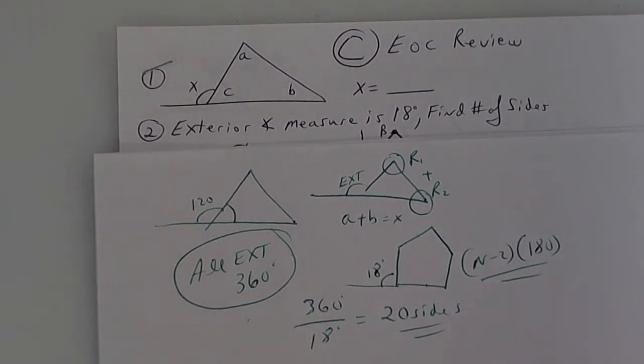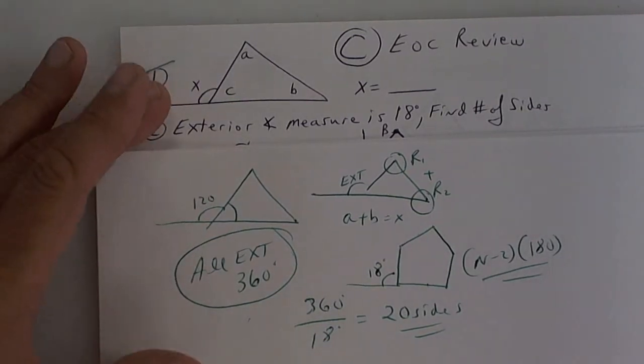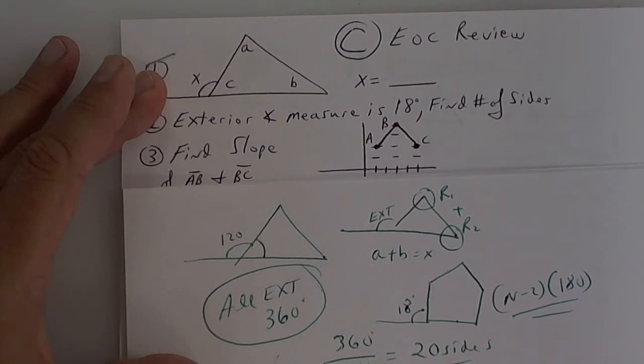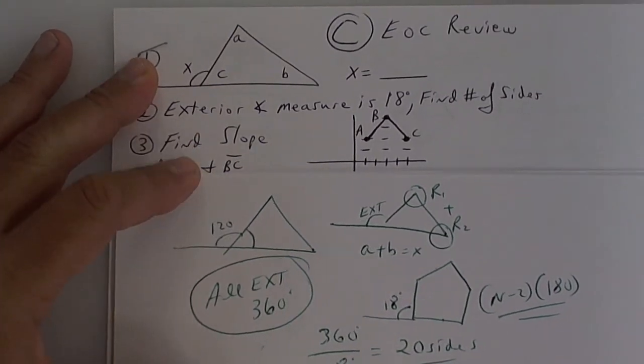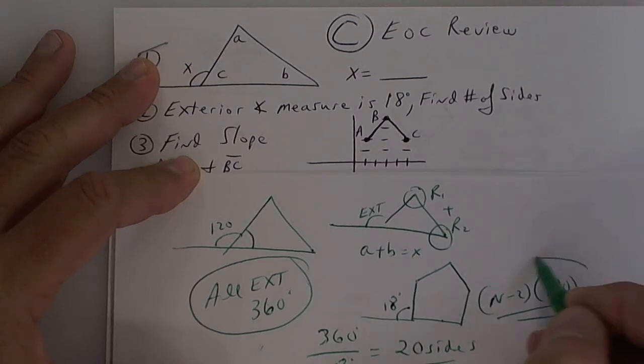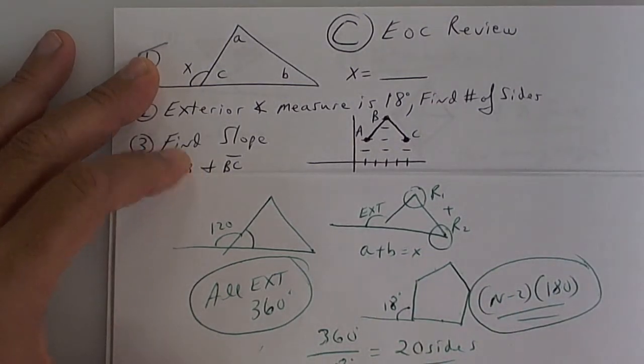So 20 sides would be the answer. But again, you've got to know that all the exteriors will only be 360, nothing more, nothing less. And then you divide it by the angle that they give you. Alright, next.